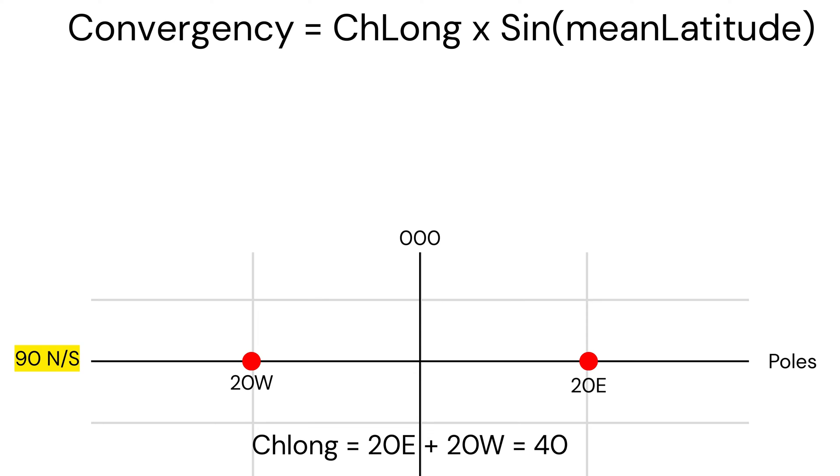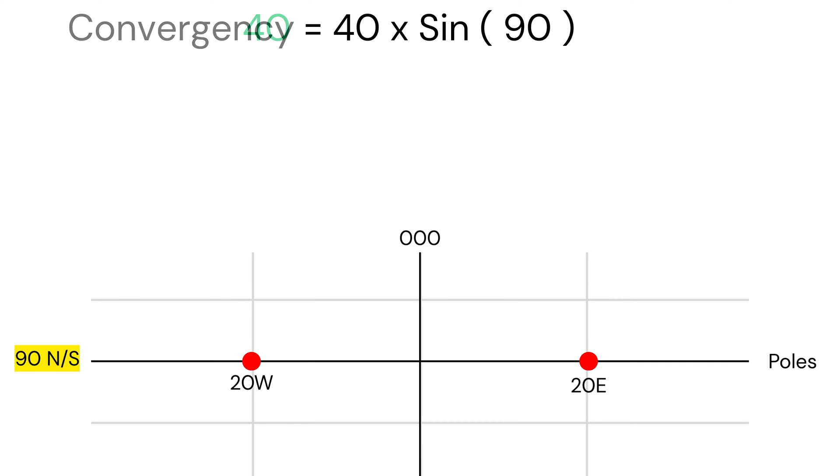ChLong is again 40 degrees. Mean latitude is 90 plus 90 divided by 2, which comes to 90. If you substitute these in the formula, you get 40 as the answer.